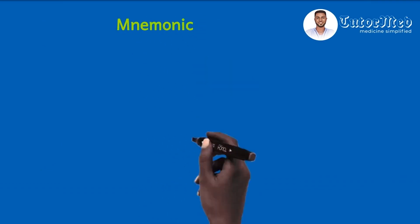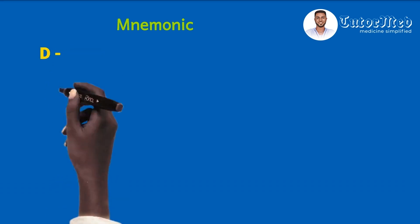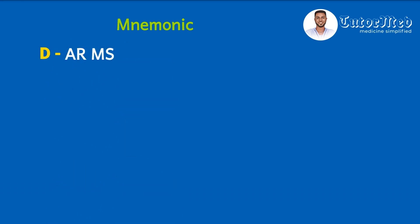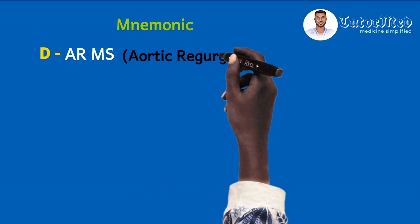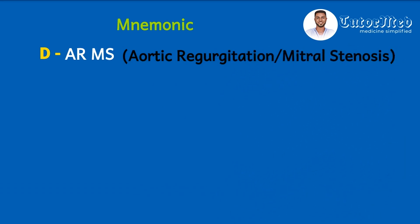Now to our mnemonic — before we look at it, please do not forget to like and share the video, subscribe to our channel, and leave your thoughts in the comment section below. The mnemonic we are using is D-ARMS. D stands for diastole, AR stands for aortic regurgitation, and MS stands for mitral stenosis. This means the diastolic murmurs are aortic regurgitation and mitral stenosis, and these are left-sided murmurs.